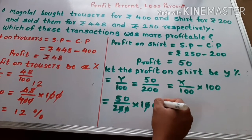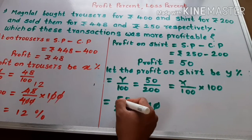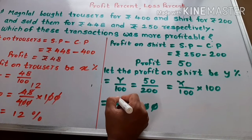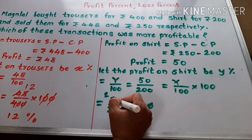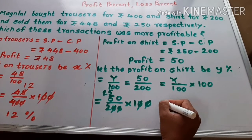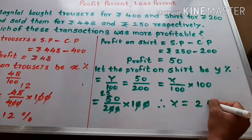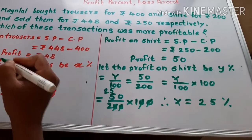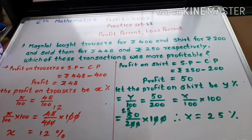We cancel zeros. 2 ones are 2, 2 twos are 4, remainder 1 and 2 fives are 10. Then we get Y is equal to 25%.